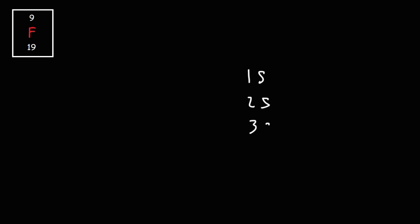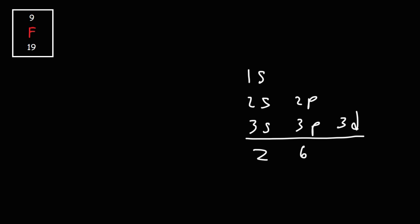The bottom number is the average atomic mass of fluorine — it's the larger of the two numbers — and we're not going to use that in this video. The first thing you want to do is write down the sublevels: we have the s sublevel, the p sublevel, and the d sublevel. S can hold up to two electrons, p can hold up to six, and d can hold up to ten. We're going to write the electron configuration until the sum of the exponents adds up to nine.